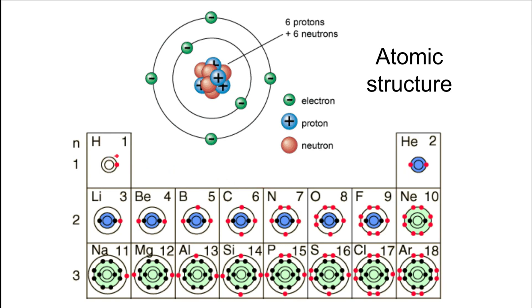The number of electrons in the outermost shell of an element determines the number of bonds it can form. Hydrogen has one electron in its outer shell, so one space — it can form one bond. Carbon has four spaces, so four bonds. Nitrogen has three spaces, so three bonds, and oxygen has two spaces, so two bonds. Remembering these basic facts will help you draw the biological molecules needed for the course.